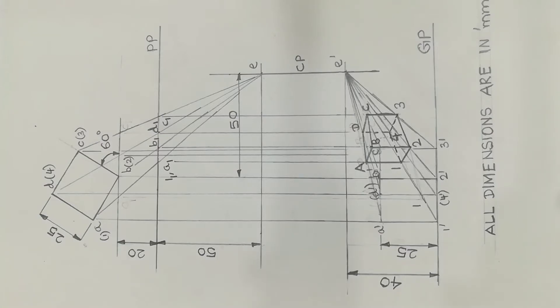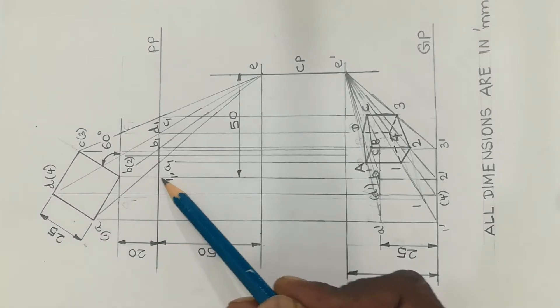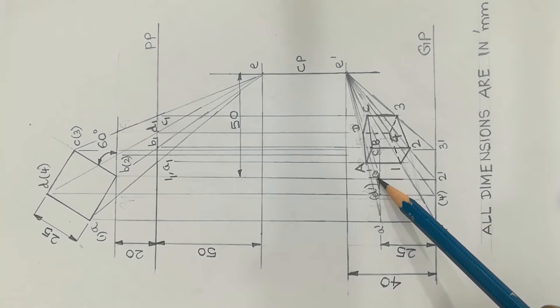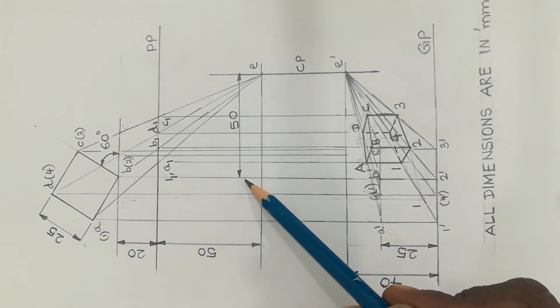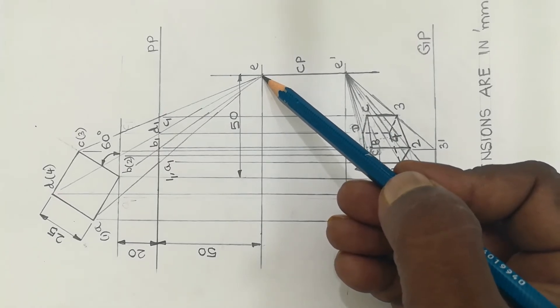In practice, there are two station points - one for the top view and another one for the front view. As per the question data, the nearest vertical edge - vertical edge is B2. B2 is the nearest vertical edge to the picture plane. Either in the front view, the nearest vertical edge is B dash 2 dash - B2. The station point, from the B2 edge to the vertical edge, to the right side of the station point, 50 mm distance - station point is located.